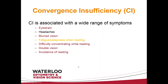Convergence insufficiency symptoms include eye strain, headache, blurred vision, fatigue or sleepiness when reading, difficulty concentrating while reading, double vision, and avoidance of reading. Almost all of these symptoms are the same as the common vision symptoms in Parkinson's disease. In Parkinson's we know that fatigue is an issue as generalized fatigue, so it may or may not be the same cause, but headaches on this list are not really on the Parkinson's list.